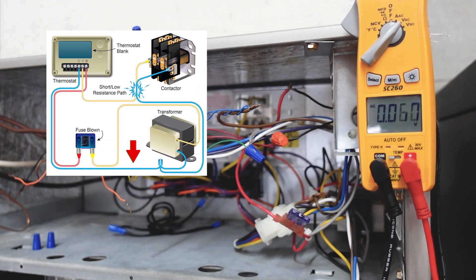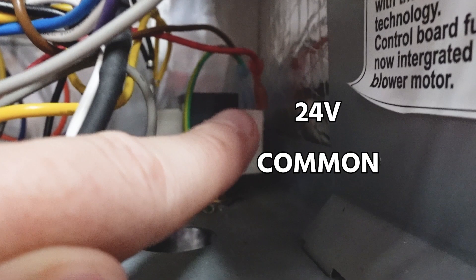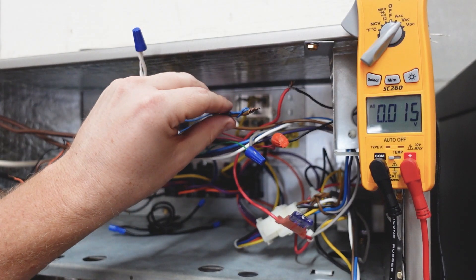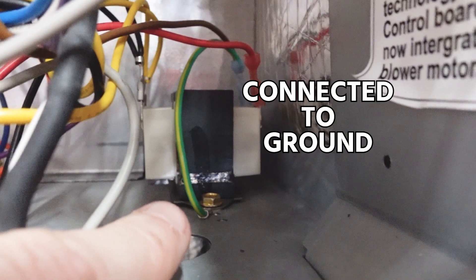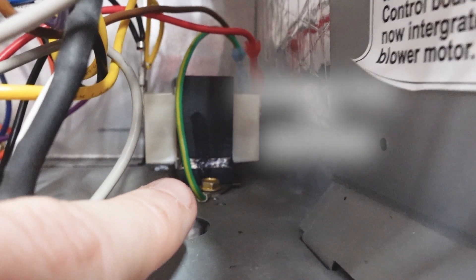And then on the other side of our transformer secondary, we have a 24 volt common, which is this brown wire here. Now this transformer has what we call a grounded secondary. So the common on the secondary is actually connected to ground via a green wire.